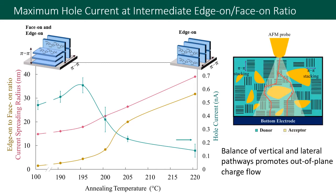We also saw that molecular orientation played a stronger role than the degree of crystallinity, since overall crystallinity increased as the annealing temperature increased but the hole current actually decreased rather than increasing as expected for a more crystalline sample. We attribute the low currents at high annealing temperatures to the extensive edge-on molecular stacking that limited out-of-plane charge flow. In summary, lateral connectivity plays a key role in bulk heterojunctions and there needs to be a balance between vertical and lateral transport pathways for efficient performance.